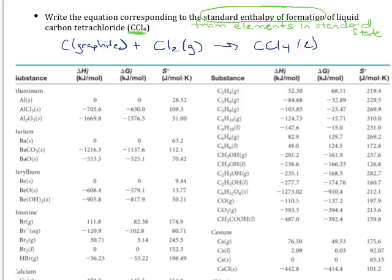The last thing we want to do is make sure this is balanced. There's one carbon atom on each side of the reaction, which is fine. We just need to make sure we have four chlorine atoms on each side, so a coefficient of two in front of the chlorine molecule. So this is how you write standard enthalpy of formation reactions.